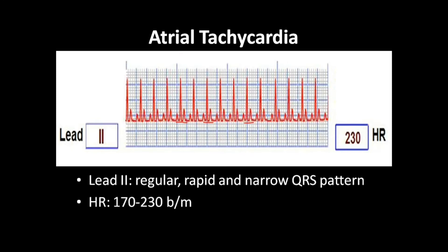The heart rate will be between 170 and 230 beats per minute. In sinus tachycardia, the heart rate goes up to 150 beats per minute, but if it is more than 150 — that is, 170 to 230 — then it is atrial tachycardia.